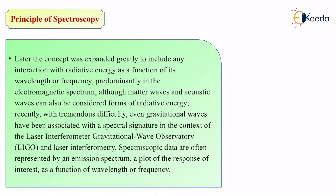Spectroscopic data are often represented by an emission spectrum — a plot of response of interest as a function of wavelength or frequency. The overall data collected after spectroscopy has happened is represented by the emission spectrum. For example, when Isaac Newton passed light through the prism, he showed the emission spectrum — how the emission happened, how the deflection and dispersion of light occurred. Apart from emission, the entire story can also be shown as a function of wavelength or frequency. This entire concept is known as the principle of spectroscopy.